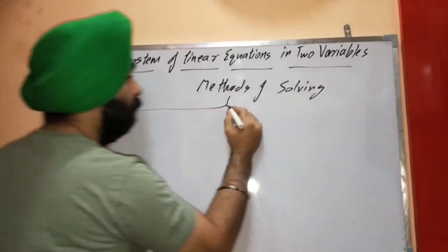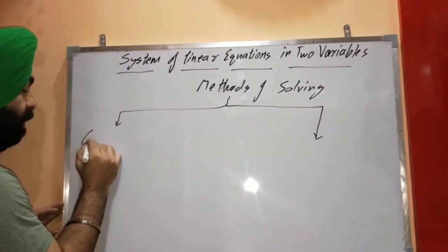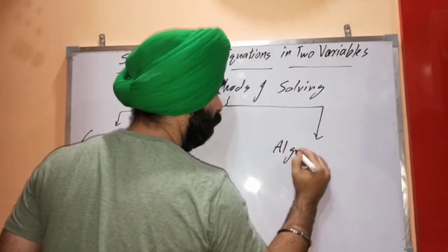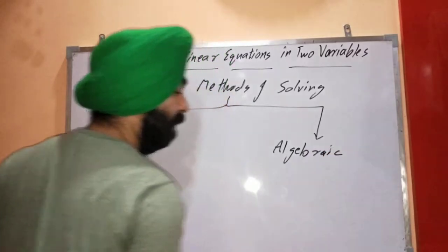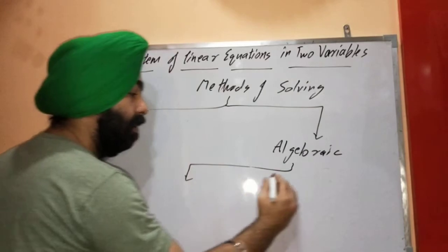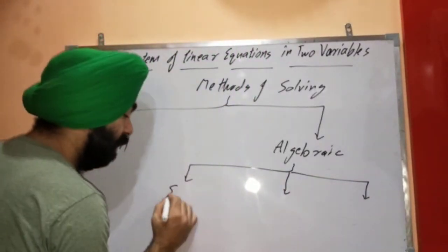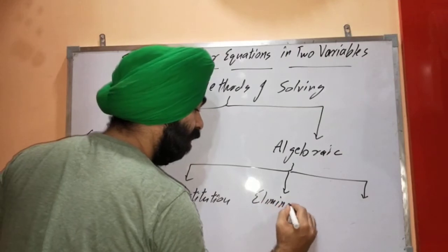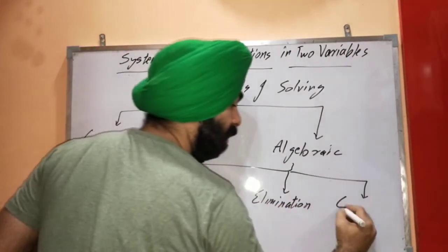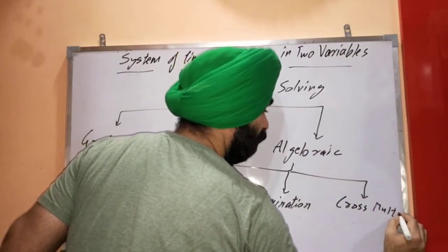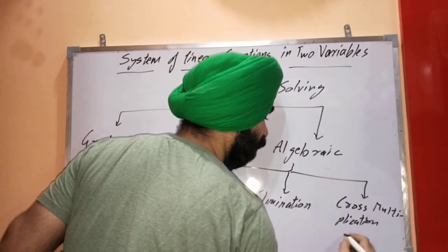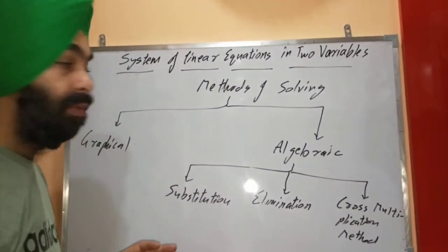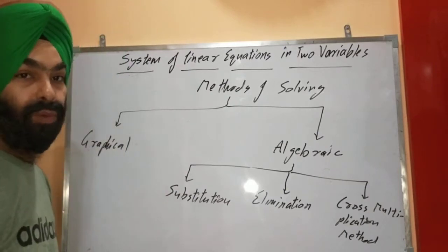Now, how to find the solution — methods of solving. There are two broadly defined methods: the first one is the graphical method and the other one is the algebraic method. The algebraic method is further divided into three types: the first is substitution, the second is elimination, and the third is the cross multiplication method, which is also called Cramer's method. I'm going to describe all four methods one by one.